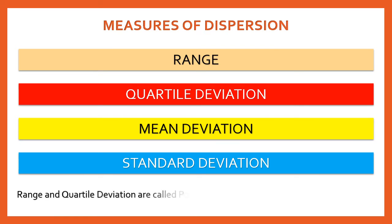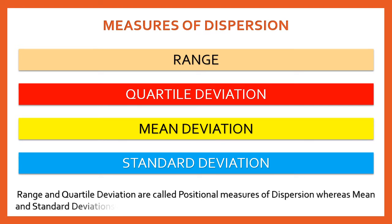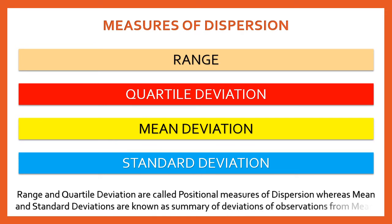We will study these four measures in detail. Range and Quartile Deviation are called positional measures of dispersion because they are calculated based on the position of observations. Mean Deviation and Standard Deviation are known as summary of deviations of observations from the mean. I will explain this in detail when we use these measures in calculations. Let's start with Range.